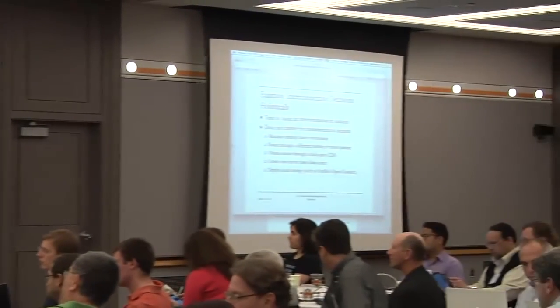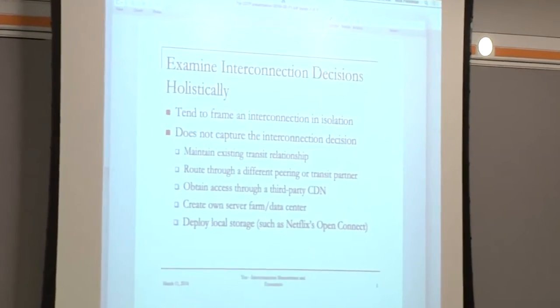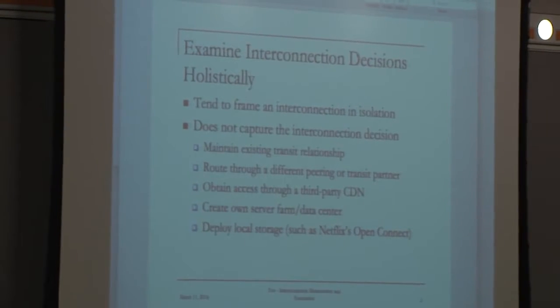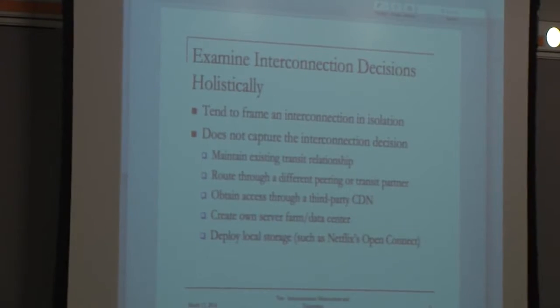What's interesting to me is that interconnection disputes tend to be framed as a dispute between two interconnection partners — you have a link, one person trying to provide traffic into it, they're provisioning the link, and talking about whether that price is proper. But if you think about this in economic terms, that's not really the right way to think about it. When you think about the economics of an interconnection decision, you have to understand what the alternatives were at that point.